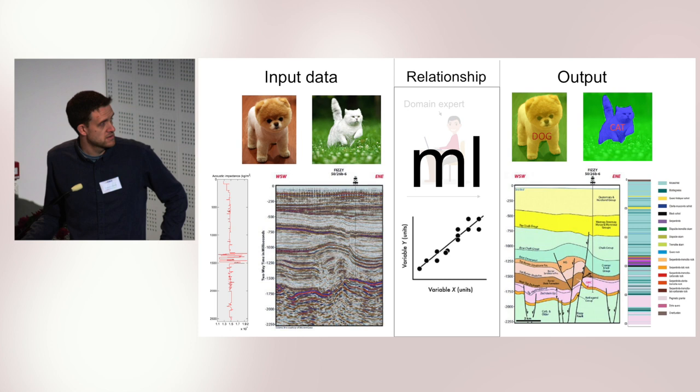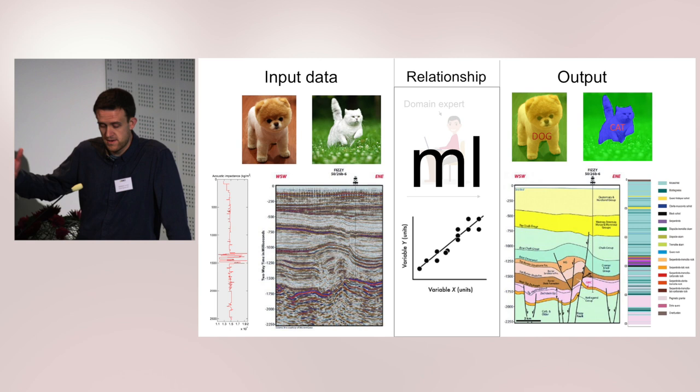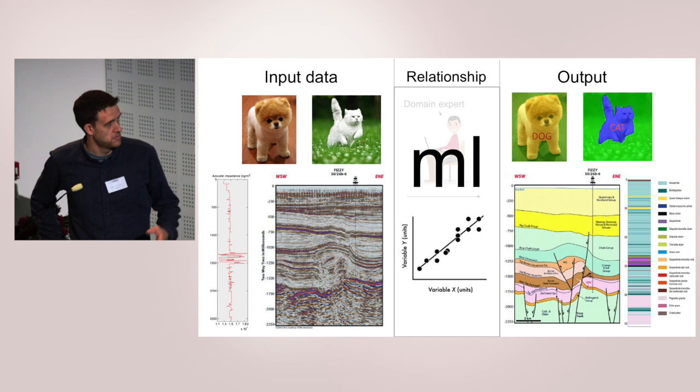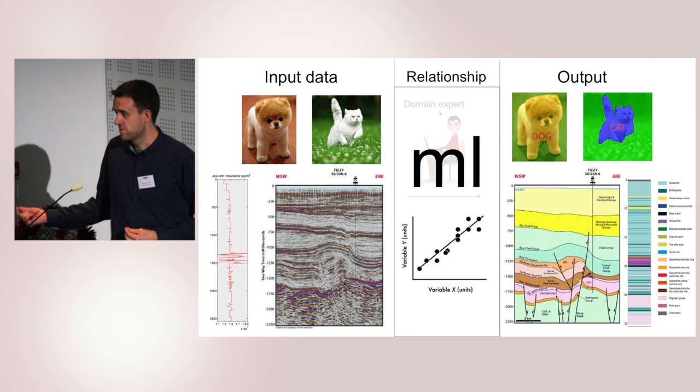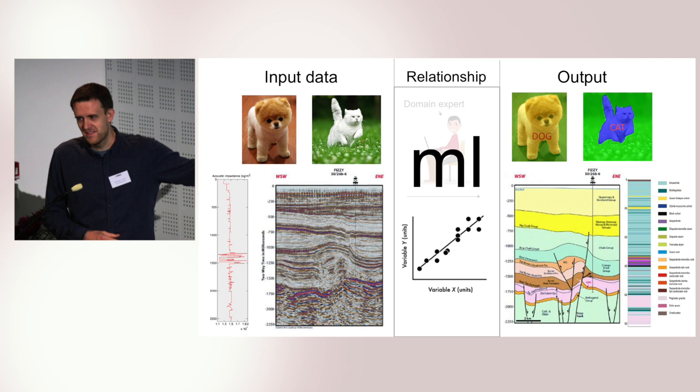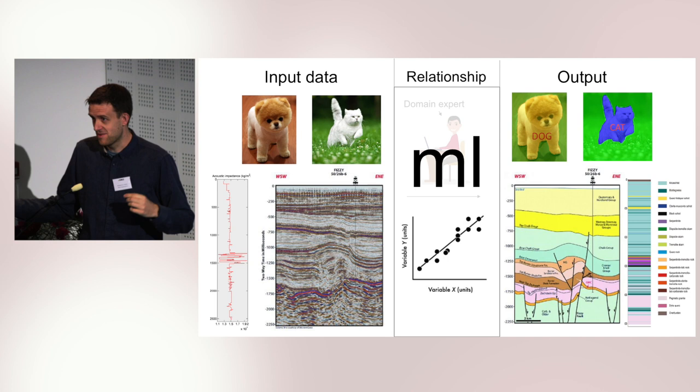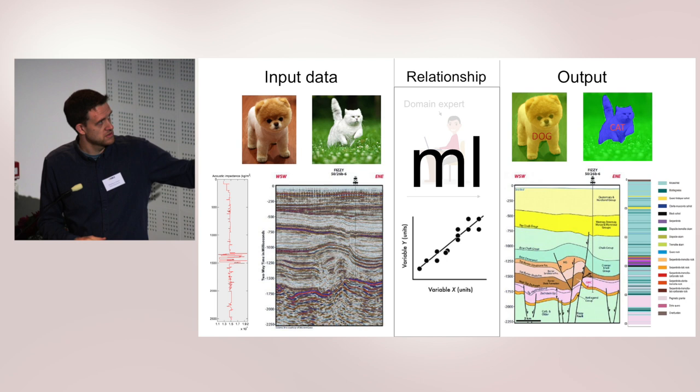Another example is that we have seismic data and want to go from this to some interpretation — maybe finding faults or a salt body. The main assumption behind machine learning is that there is a relationship between our input and output data. Sometimes people want to do machine learning when there really is no connection, but that relationship is the fundamental assumption.